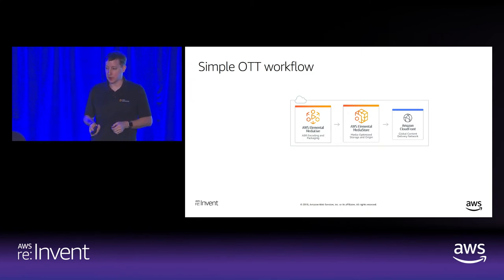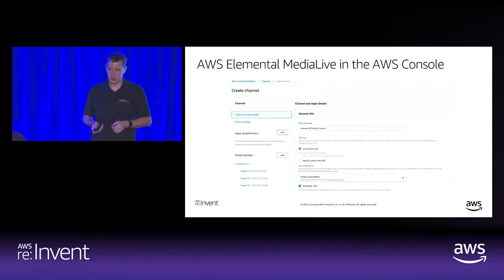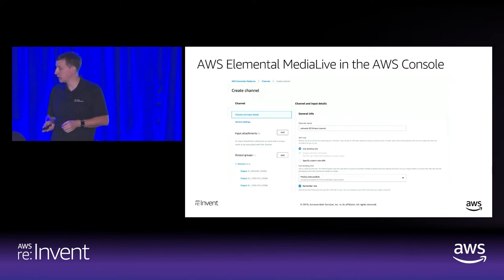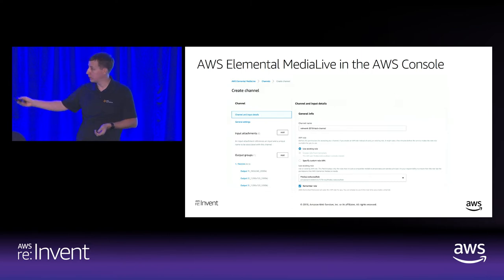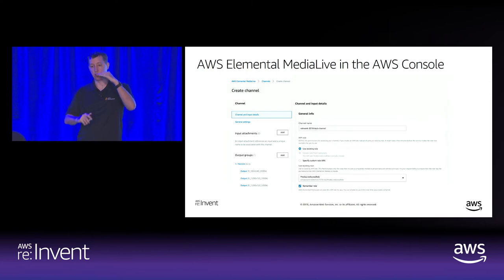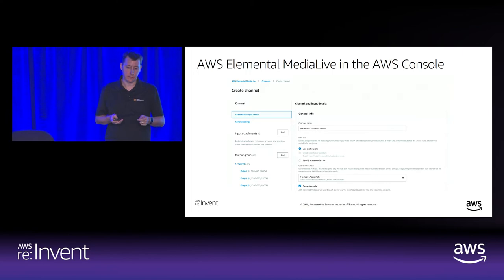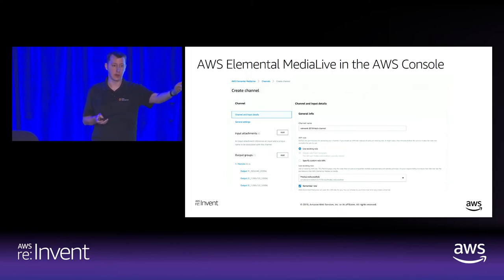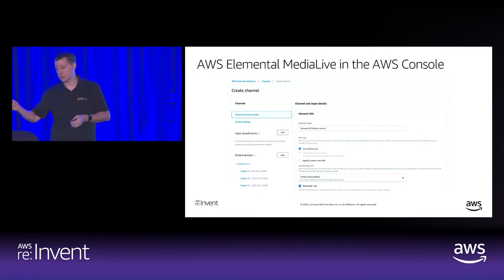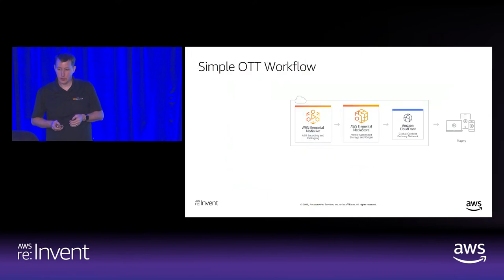Those are the three services that go together, and MediaLive is very easy to configure. This is the Create Channel page. You give your channel a name, tell it where the input comes from, and you can see on the output groups there are individual outputs. You tell MediaLive the input type, it gives you the input IP address, and you tell MediaLive where to send the content — in this case, your MediaStore bucket.